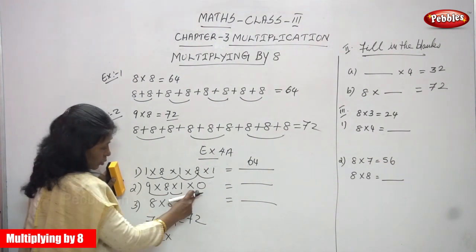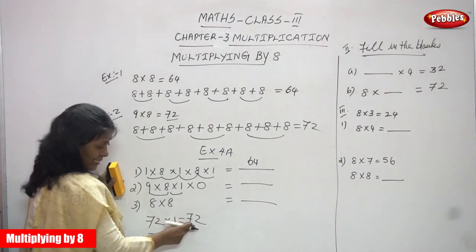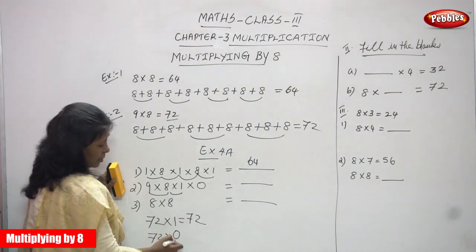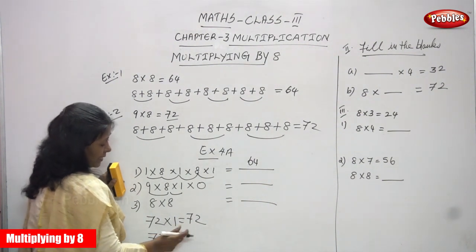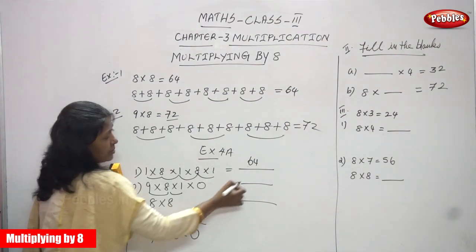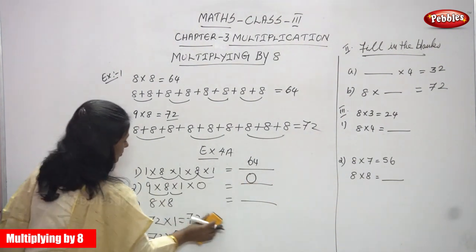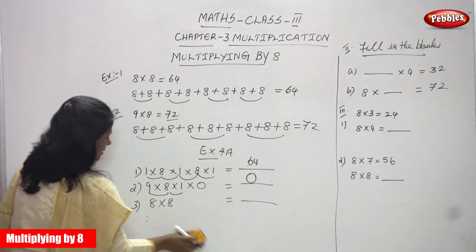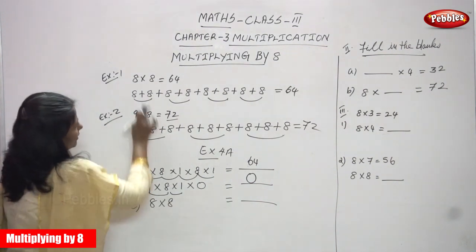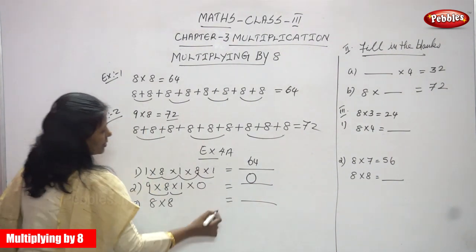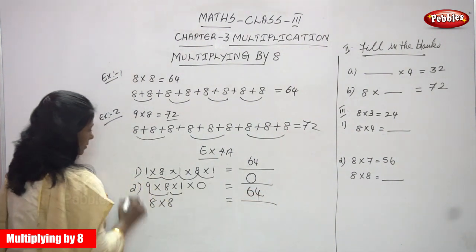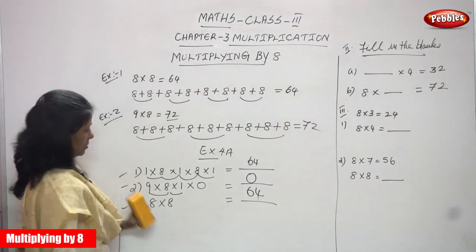72 multiplied by 0: any number multiplied by 0 gives 0. So the answer is 0. Next, 8 into 8 — you know that 8 into 8 is 64. That is the right answer.